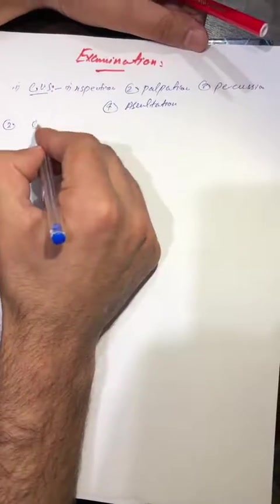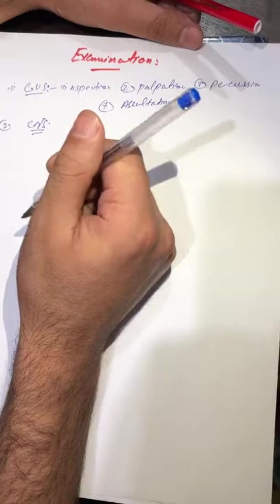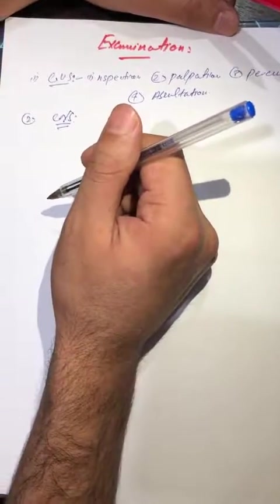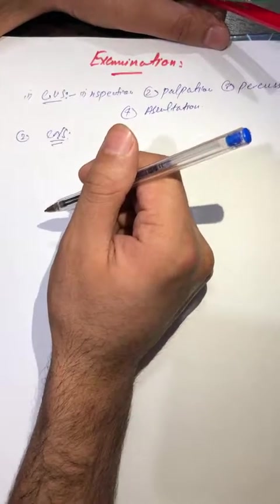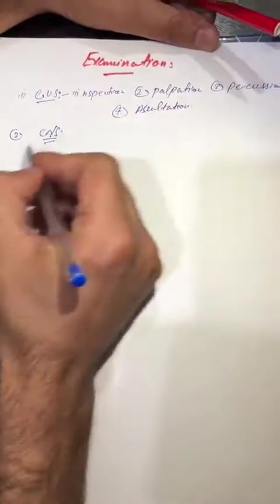The second one systemic-wise is central nervous system examination. We will check any peripheral neuropathy, any muscle tones, and we will check for any type of epilepsy, etc.